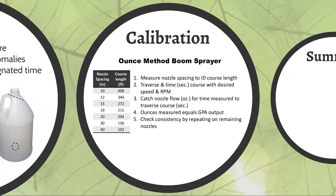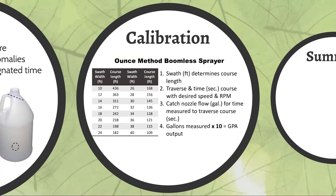For a boomless option, the math is a little different. Your effective swath width — not the label width, but how wide you're actually expecting that product to go — drives the course length. Consult your county extension agent for a good recommendation. Let's say you're comfortably spraying 30 feet wide; in that example, you'd measure a course that's 145 feet long. Traverse it, same procedure, except at the end the gallons measured times 10 equals your gallons per acre output. That's the only variation.